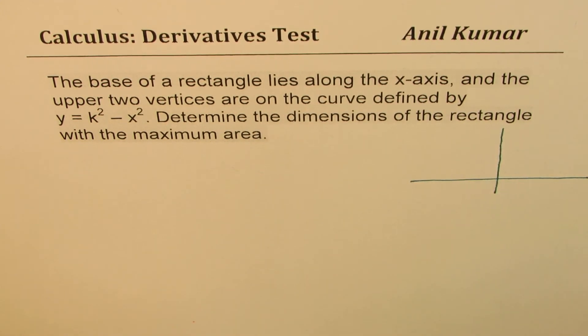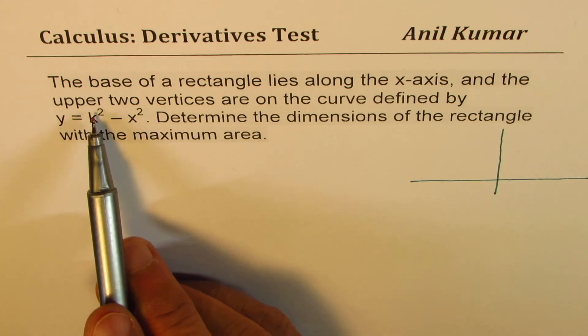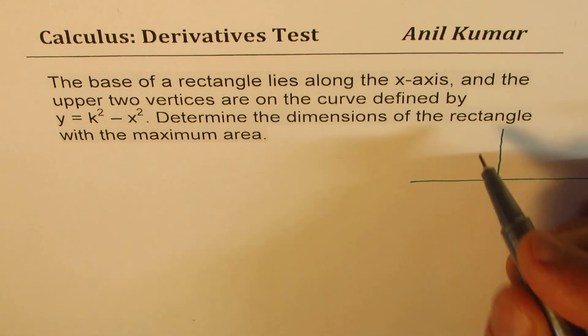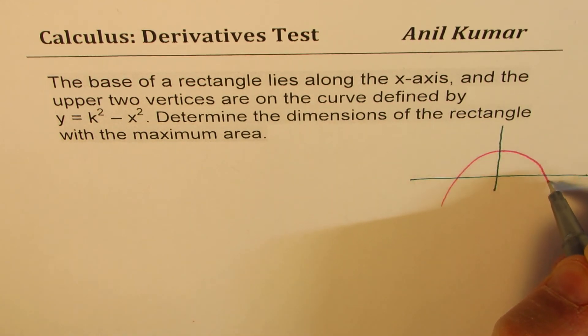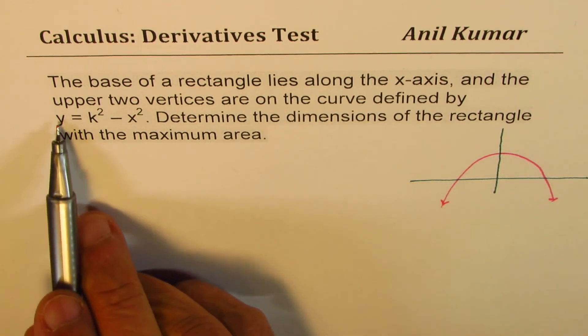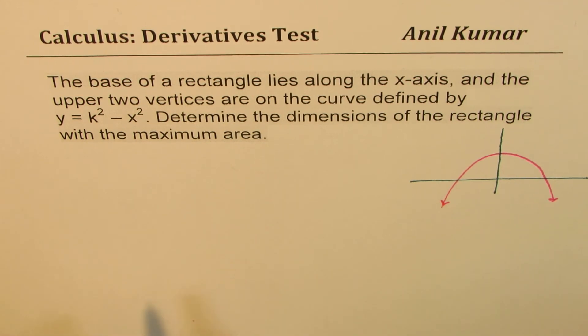So let us sketch the scenario. We have the curve, which is y equals k squared minus x squared, which is an inverted parabola. So let it be kind of like this. Now, any point on this curve will be defined by y equals k squared minus x squared.